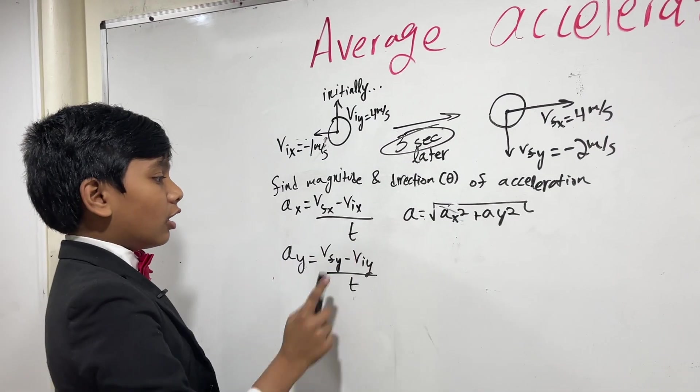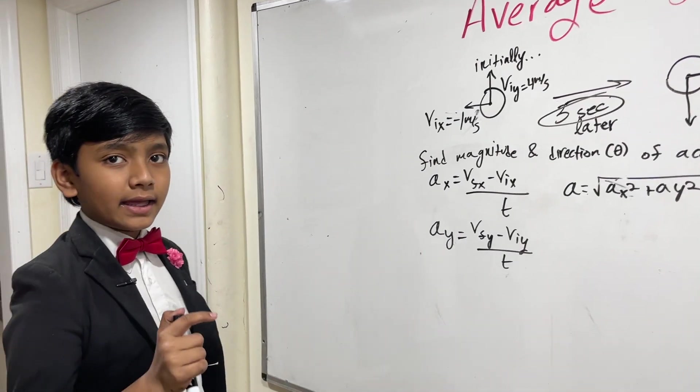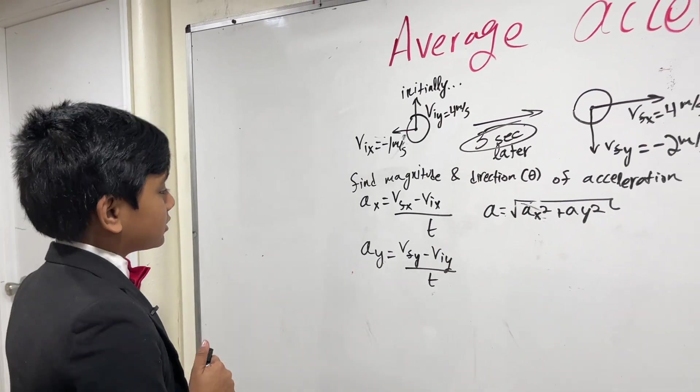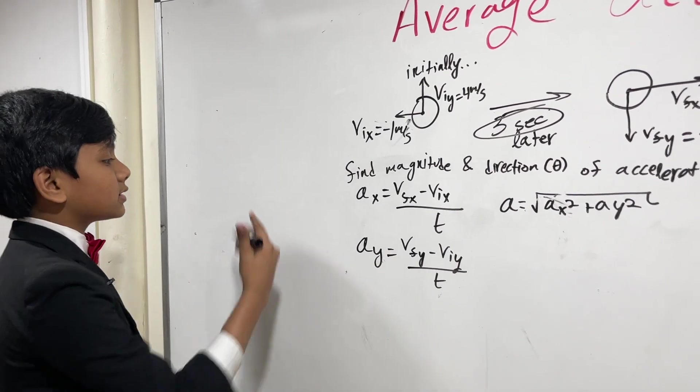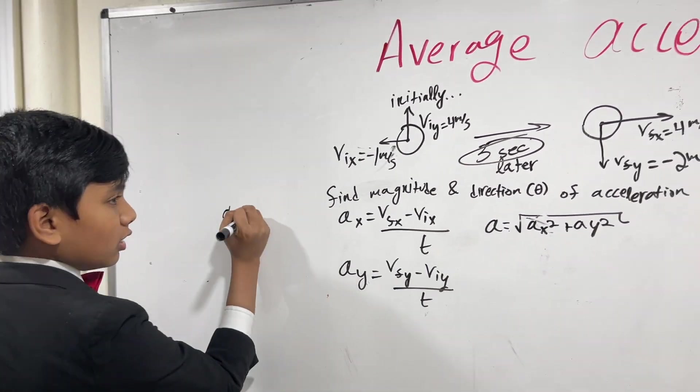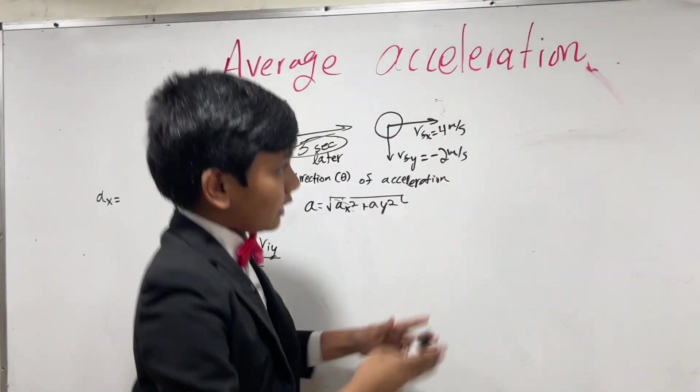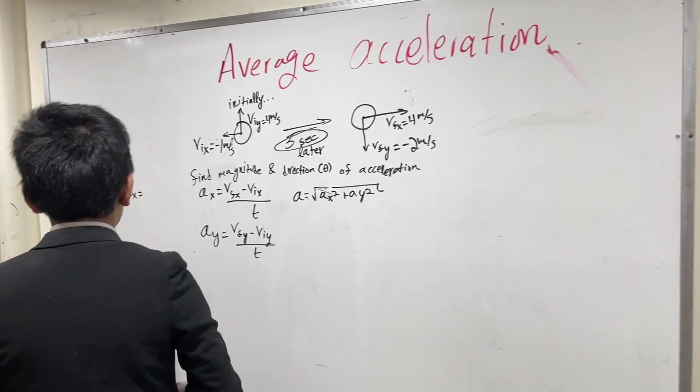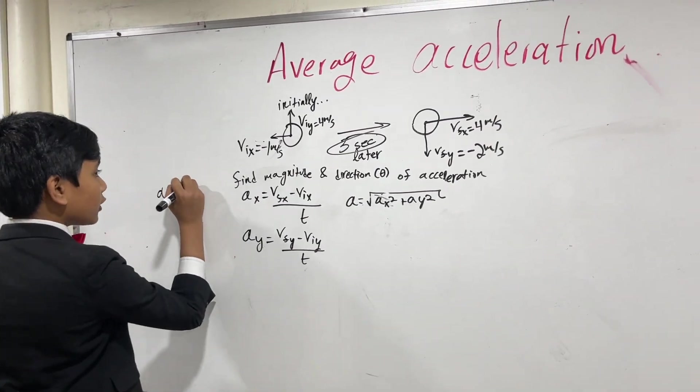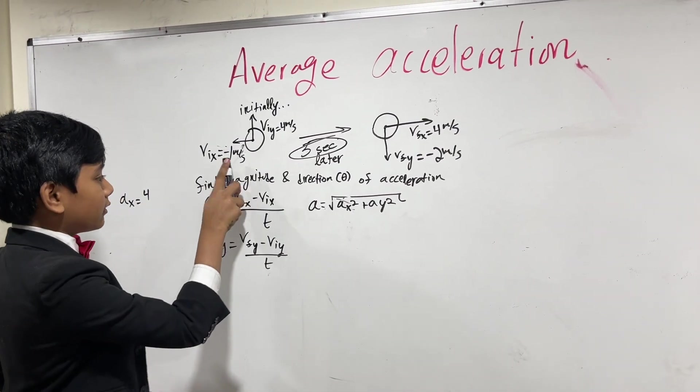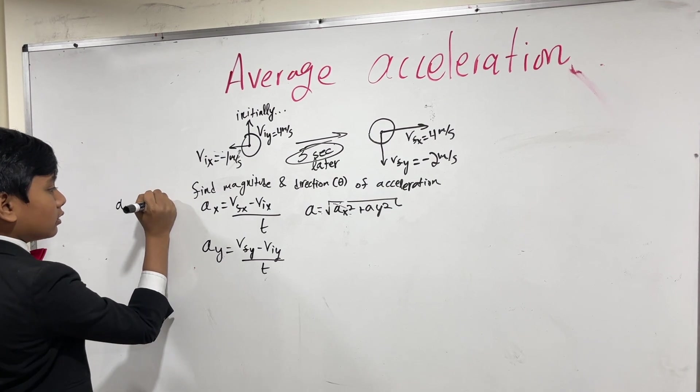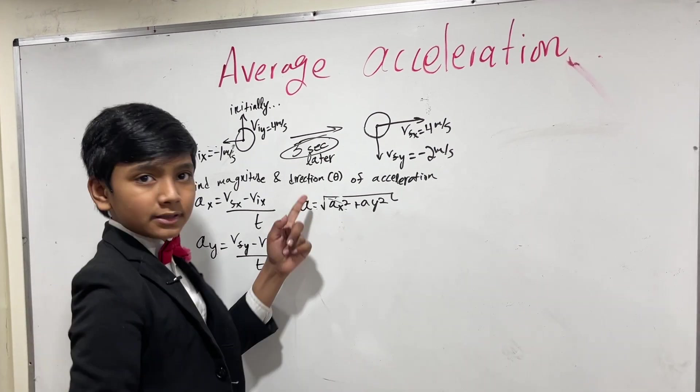And now, let's try working all of this out. What is Ax? Not Ax squared. Just plain old Ax. Well, if we look, Vfx is 4. So, we can put that over here. And Vix is negative 1, so we can put that over here. And we know that our time is 3 seconds.